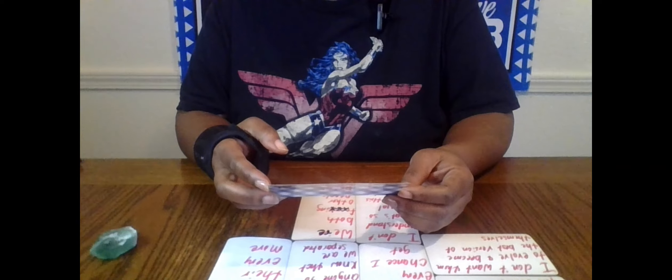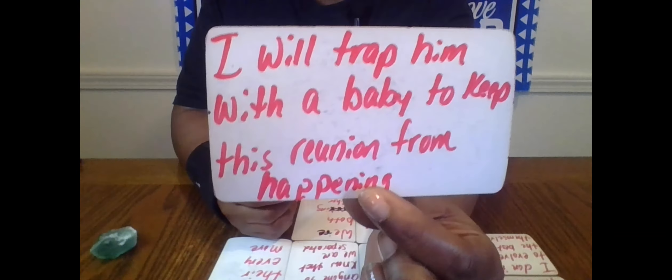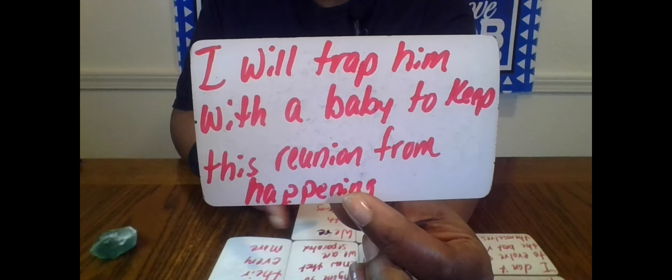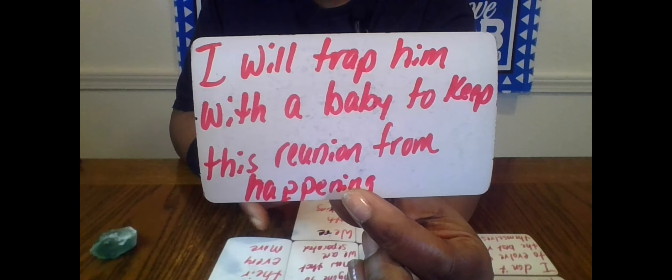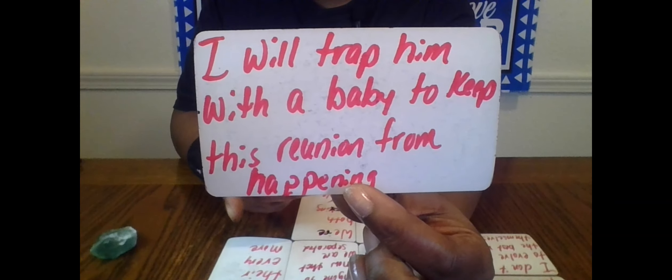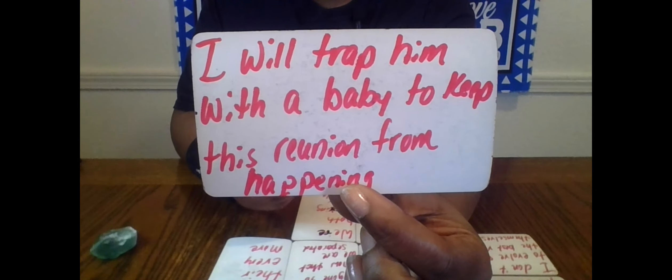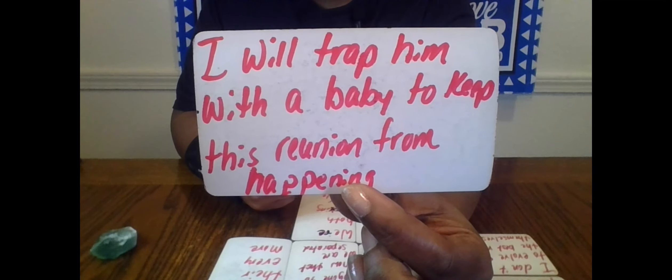Look at this, I would trap them with a baby to keep this reunion from happening. And for some of you guys, the reason why you and this person ain't came back together and why they can't make a decision about you is because this third party is trying to trap them with a baby to keep you and them from coming back together.